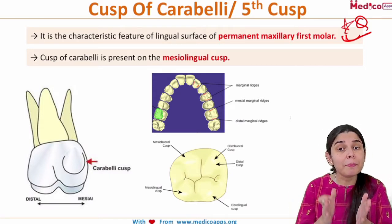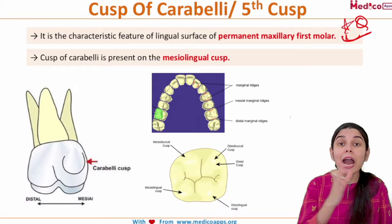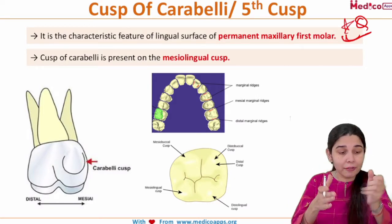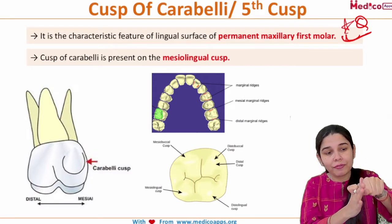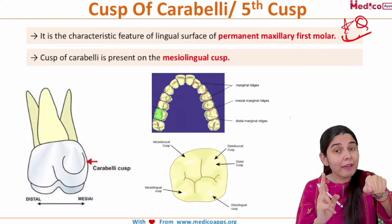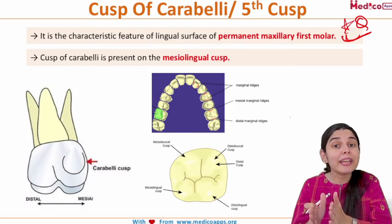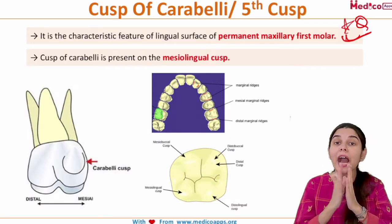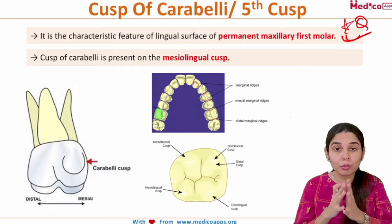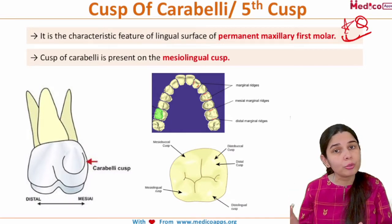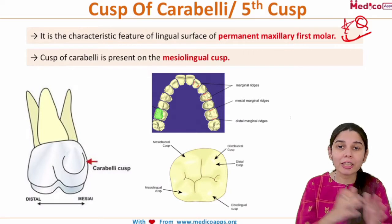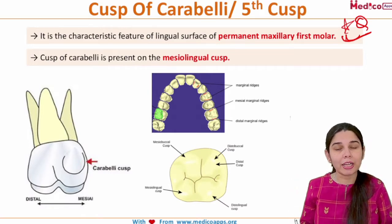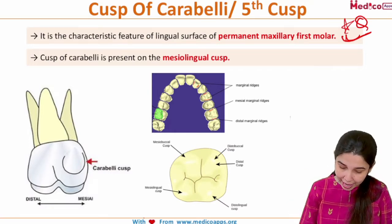More specifically, this is present on the mesiolingual cusp. There are two terms I've used: first is the lingual surface — that is the surface of the tooth facing the tongue, as opposed to the buccal surface. Now specifically, the Cusp of Carabelli is seen on the mesiolingual cusp. The cusps are the bulging areas present on the occlusal surface — there are the mesiobuccal, distobuccal, mesiolingual, and distolingual cusps, as seen in the image.